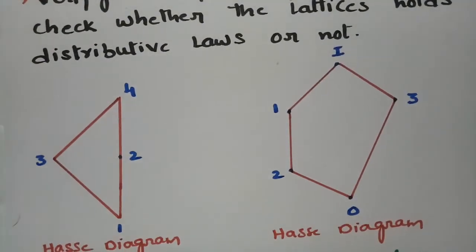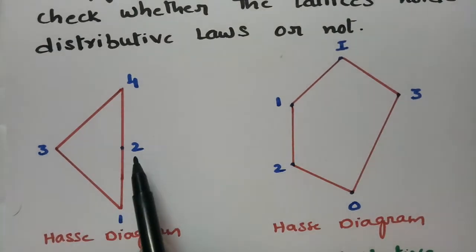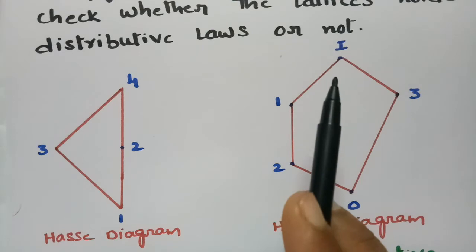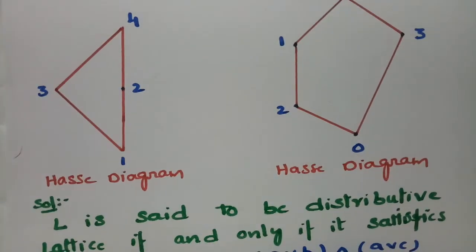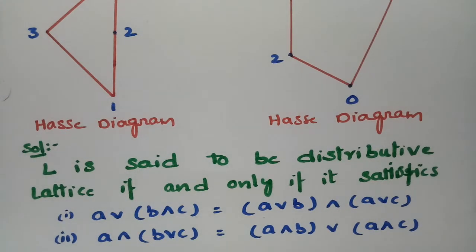For the first lattice, the Hasse diagram contains elements 1, 2, 3, and 4. For the second diagram, elements 0, 2, 1, 3, and I are given. We have to check whether both given lattices satisfy the distributive properties. L is said to be a distributive lattice if and only if it satisfies the two conditions.